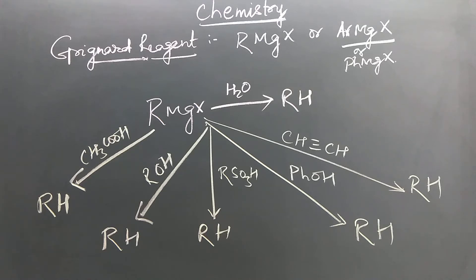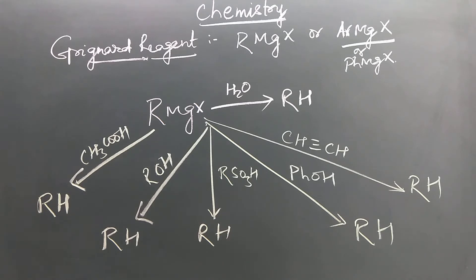It must be prepared in anhydrous condition. Grignard reagent is prepared when alkyl halide is treated with magnesium metal in the presence of dry ether.